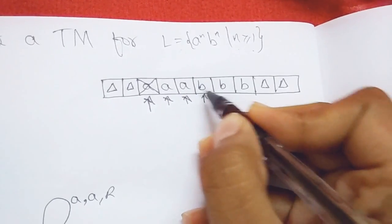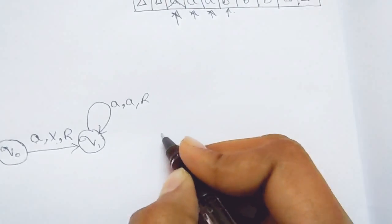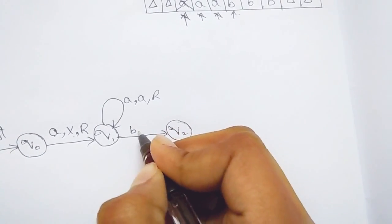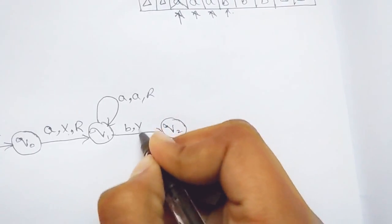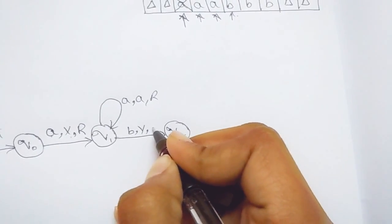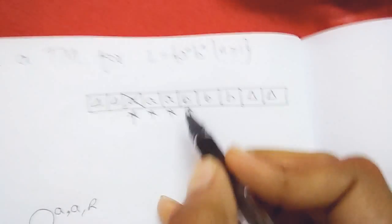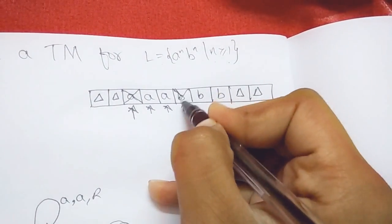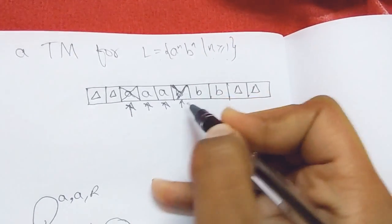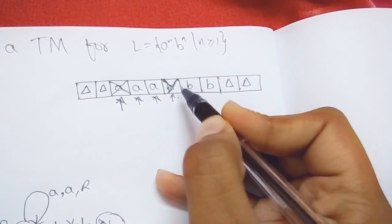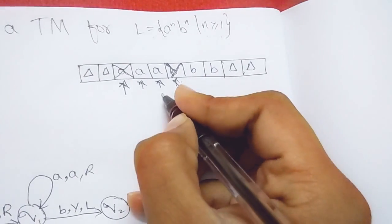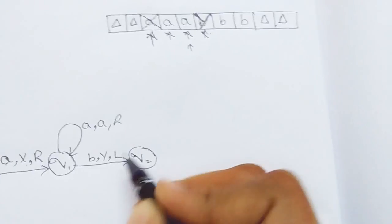Now the header sees B. After processing B, I replace it with Y. Therefore I'll have another transition state q2: whenever the machine sees B, it should replace it with Y and the header should move left. B is processed, replaced with Y, and now I have to go back to process the corresponding A for the next B, so the header moves left.